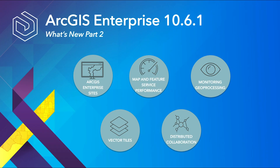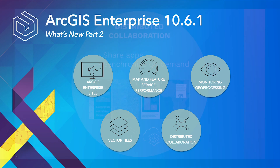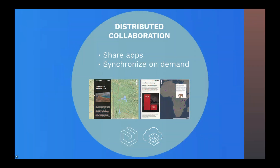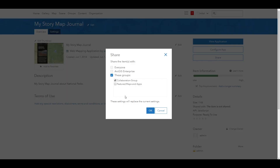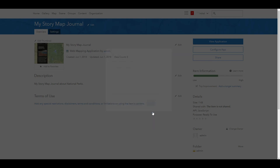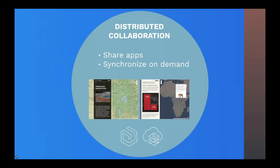And this wouldn't be a What's New video without reviewing new enhancements for distributed collaboration. Collaboration was introduced at ArcGIS Enterprise 10.5 and facilitates the sharing of data and information between ArcGIS Enterprise portals or with ArcGIS Online. With 10.6.1, collaboration introduces the ability to share applications and to synchronize your data on-demand across workspaces. Applications built with Web App Builder or using configurable app templates can now be shared with other ArcGIS Enterprise 10.6.1 portals or to ArcGIS Online.